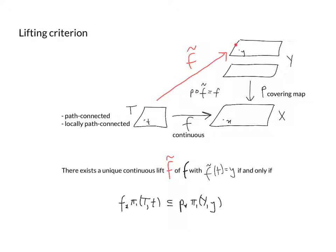We want to find a map F̃ from T to the covering space Y so that F can be obtained by first going up along F̃ and then down along the covering map. In other words, P ∘ F̃ = F. So if we do F̃ first, then P, that's the same as doing F.